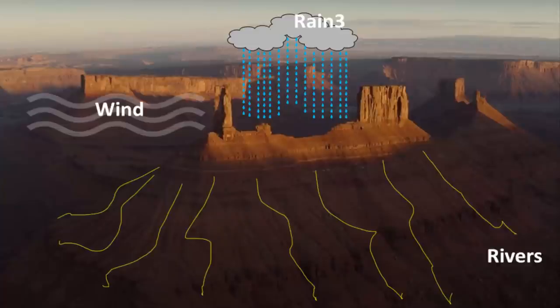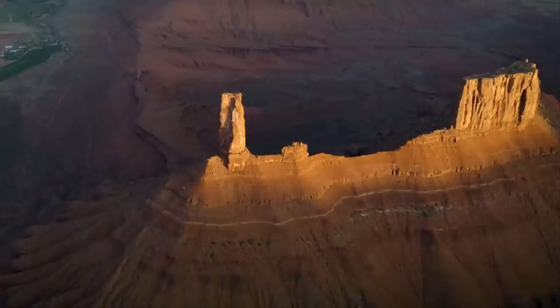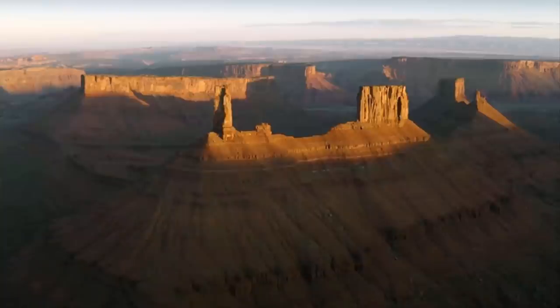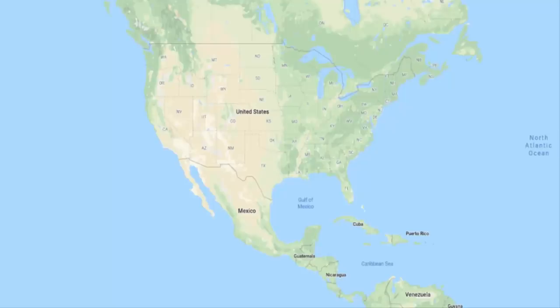Erosion is happening from all directions. That is how a butte looks like a tower. Just imagine what erosion and weathering does to a landform. Buttes are found in Mexico and the southwestern United States.